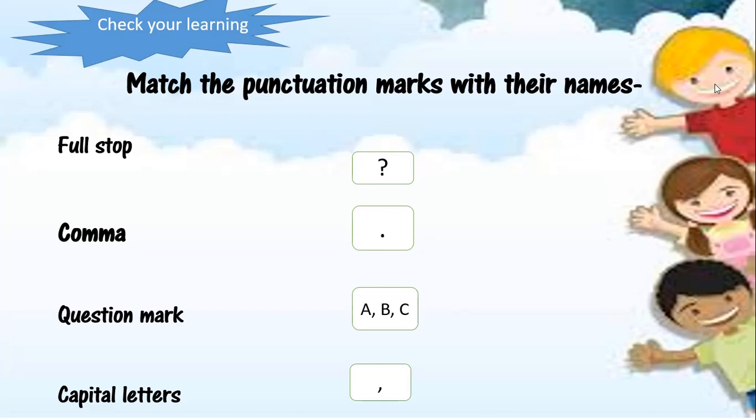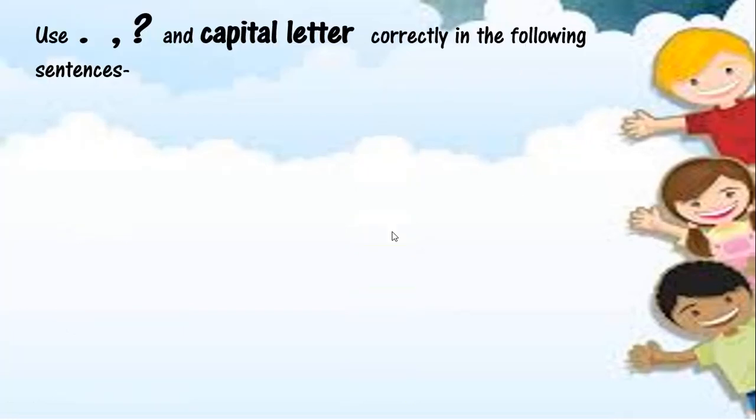Now here comes a test for you. You have to copy this question in your notebook and match the columns. You have to match the punctuation marks with their names — in the first column there are names of the punctuation marks and in the second column there are symbols for these punctuation marks. The second question is: use full stop, comma, question mark and capital letter correctly in the following sentences.